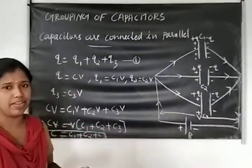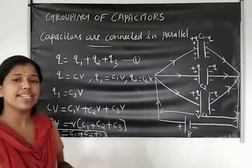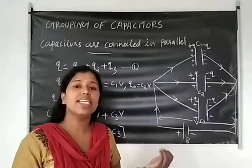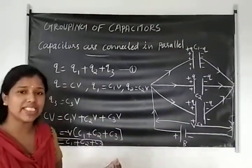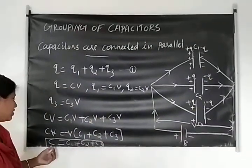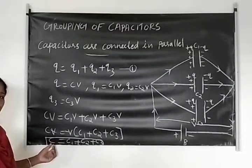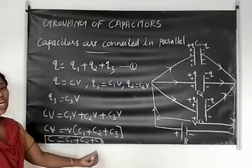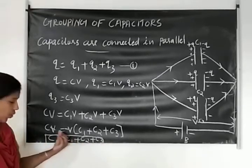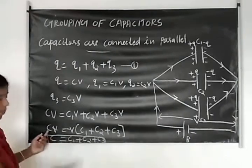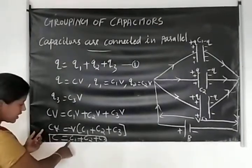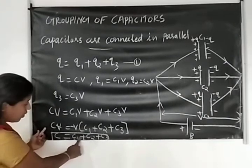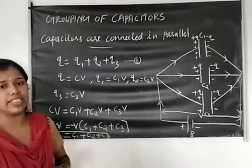For N capacitors in parallel, C is equal to C1 plus C2 plus C3 plus C4 and so on up to CN. That means total capacitance C is the sum of individual capacitances C1 plus C2 plus C3.